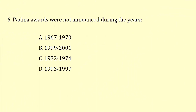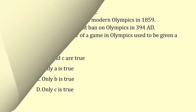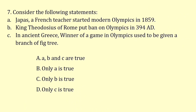Padma Awards were not announced during the years 1993–1997. Consider the following statements about the Olympics: the statement that a French teacher started modern Olympics in 1859 is wrong. King Theodosius of Rome put a ban on the Olympics in 394 AD — this statement is correct. In ancient Greece, the winner used to receive a branch of victory — this is wrong; it was actually an olive branch. So the correct option is only B is true.